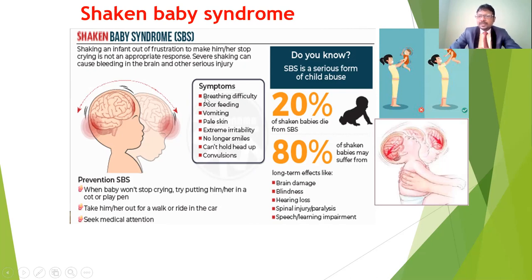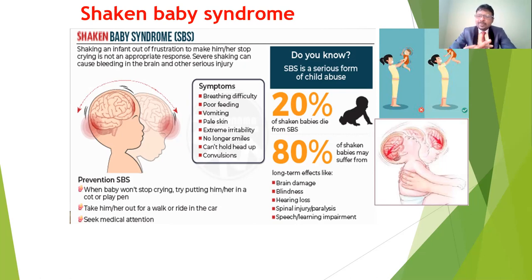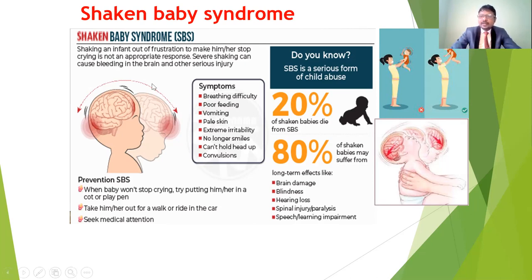How to prevent shaken baby syndrome? When a baby won't stop crying, try to put them in a cot or play pen. We should not lift the baby above the overhead level and should not give shaking activities. Take the baby outside for a walk or a ride in the car — that can also stop the crying. Seek medical attention if the baby does not stop crying or due to any health issues, so we can diagnose the problem and prevent shaken baby syndrome.